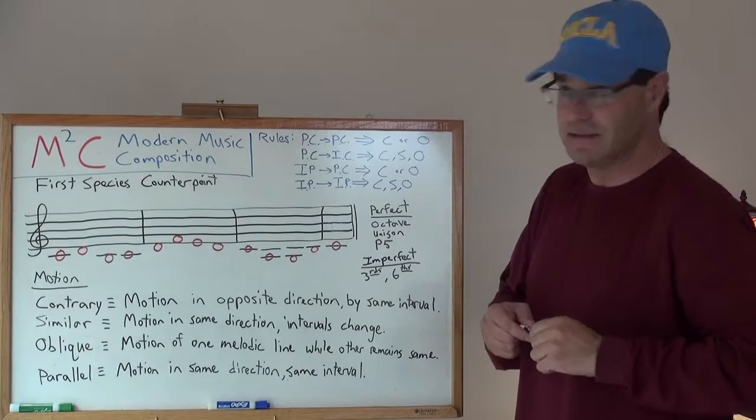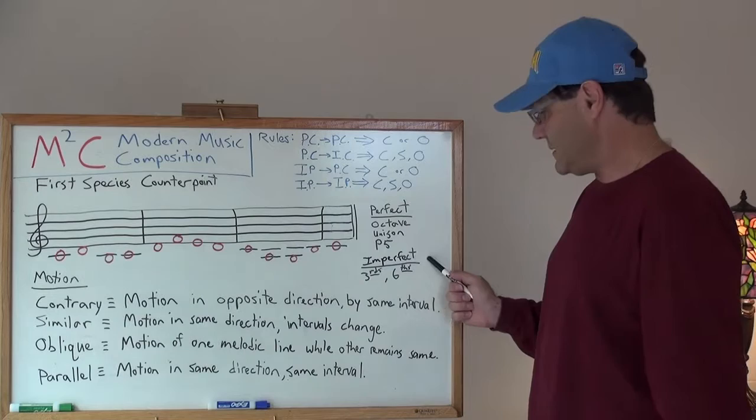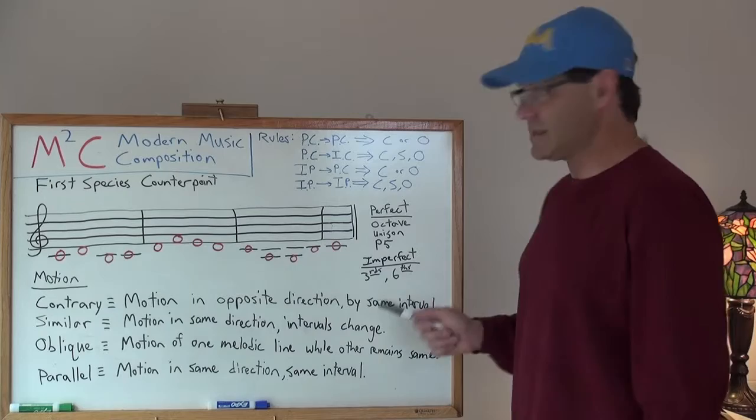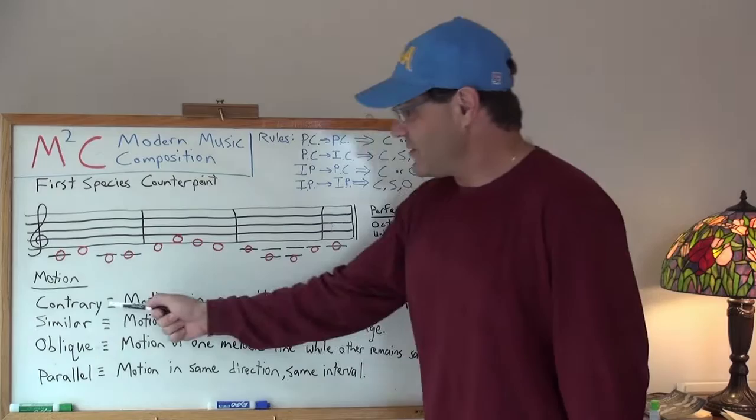PC stands for perfect consonants and IC stands for imperfect consonants. Just to review, perfect consonants are the octaves, the unisons, and the perfect fifths. Imperfect consonants are thirds, both major and minor, and sixths, both major and minor. Okay, so the cool part is the motion. So there are four different types of motion: contrary, similar, oblique, and parallel.